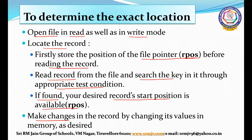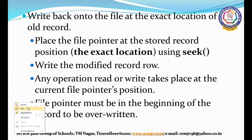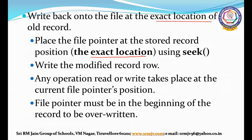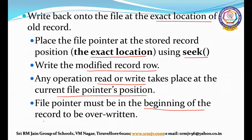Make changes in the record by changing its value in memory as desired. Then write back onto the file at the exact location. We have stored the exact location in R-position. Place the file pointer at the stored record position — that is your exact location — using the seek function, then write the modified record. Any read or write operation acts at the current file pointer position, so the file pointer must be at the beginning of the record to be overwritten.